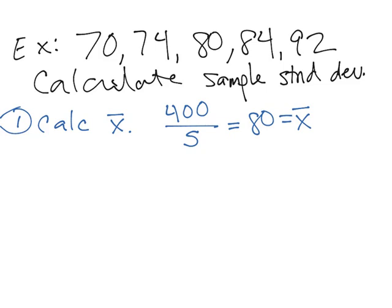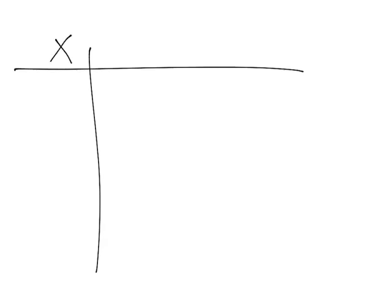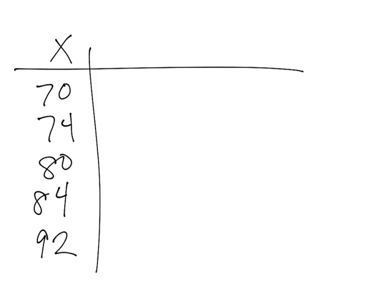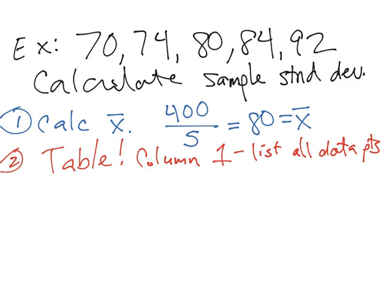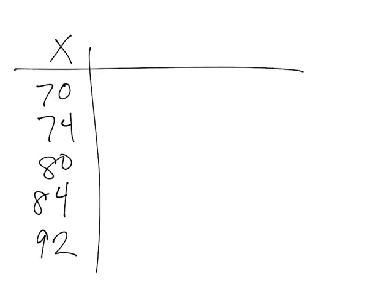For step two, we start our table. Column one lists all data points under the heading x: 70, 74, 80, 84, and 92. I like to do columns two and three at the same time. Column two is headed (x minus x-bar) — for each data point we subtract the sample mean of 80. Column three is headed (x minus x-bar) squared, where we square the value from column two.